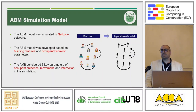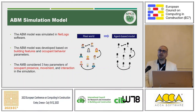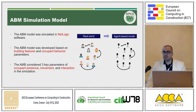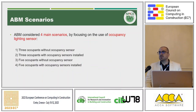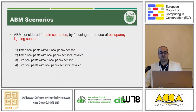We use a software called NetLogo for agent-based modeling. What I like about this software is the amount of visualization it provides. We model the three occupancy inputs — presence, movements, and interactions — in the agent-based model. We consider four scenarios: the office fully occupied with five occupants or under-occupied with three occupants, combined with two situations — with or without occupancy sensors installed.